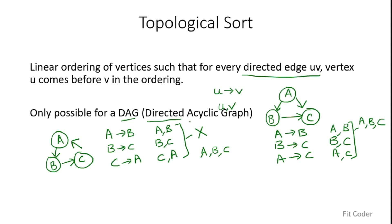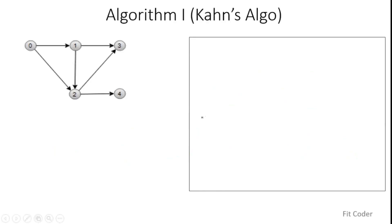Now let's see the algorithm in detail. There are two algorithms for topological sort and we will see both. The first one is known as Kahn's algorithm. Kahn is the name of the person who invented this algorithm.